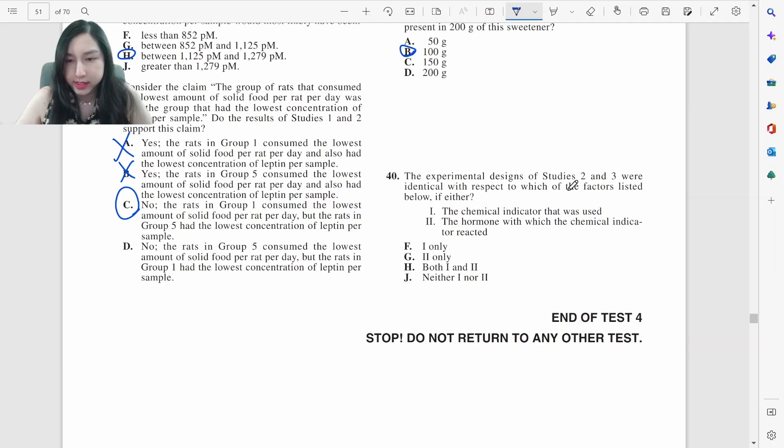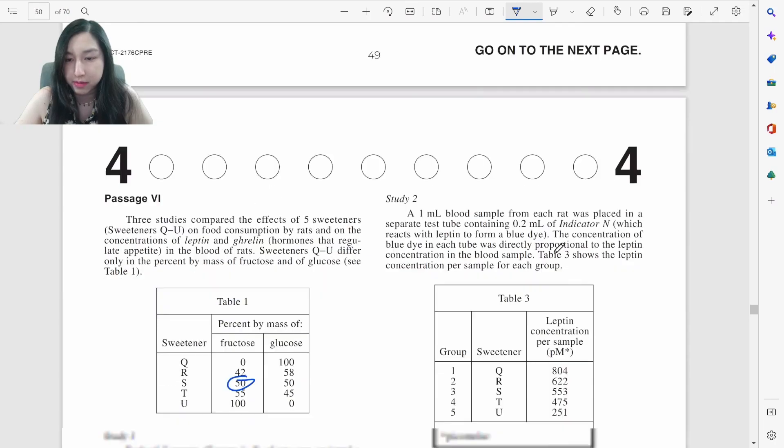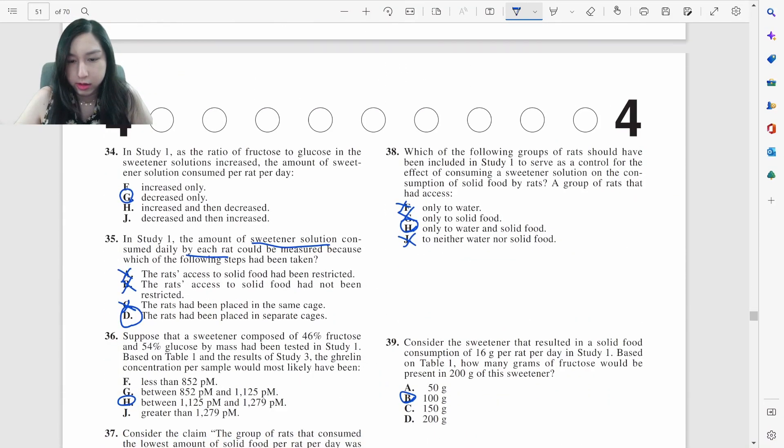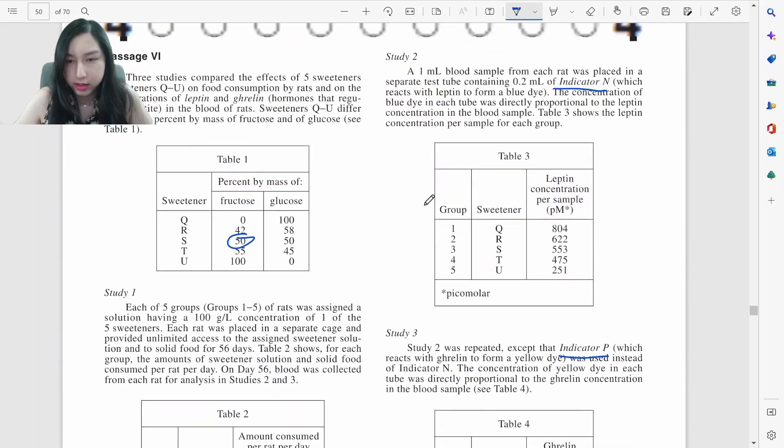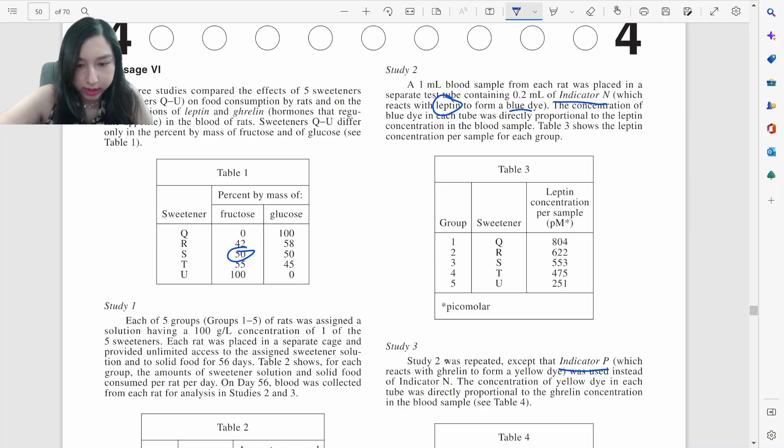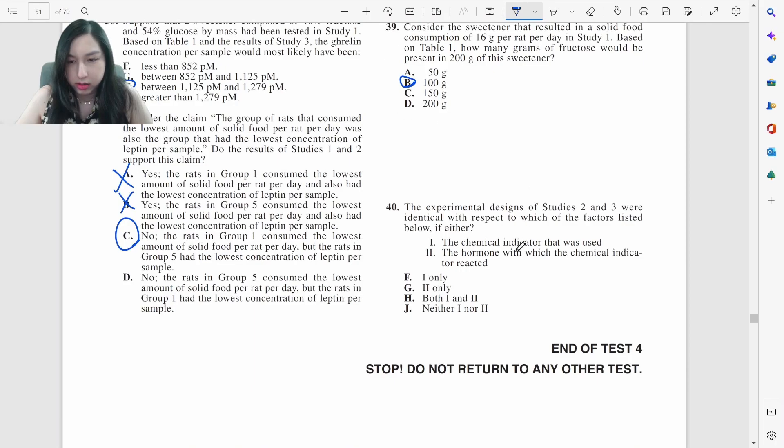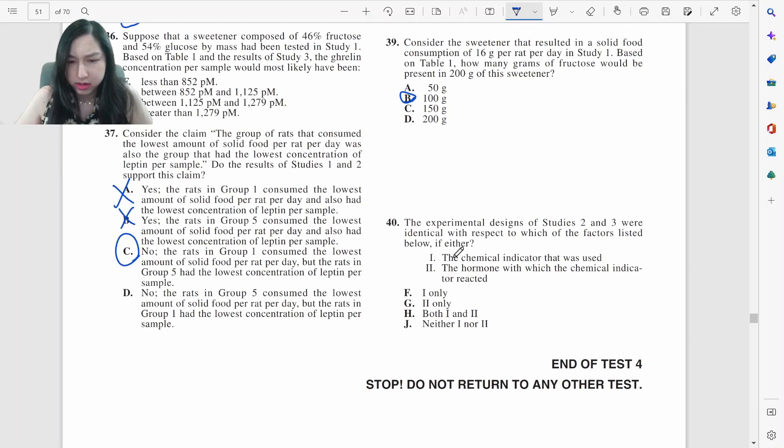The experimental designs of studies two and three were identical with respect to which of the following factors listed below would be the chemical indicator, hormone, which the chemical indicator reacted. It's going to be about the chemical indicator. This was used indicator N, this was indicator P. So different indicators and then this reacts with leptin to form blue. This reacts with this to form yellow. So chemical indicate they have, what are they identical in chemical? They have different chemical indicators. One's N, one's P and then one's leptin and then ghrelin. So is there no option? Oh, there we go. J, neither. And that is the entire science portion of the ACT.